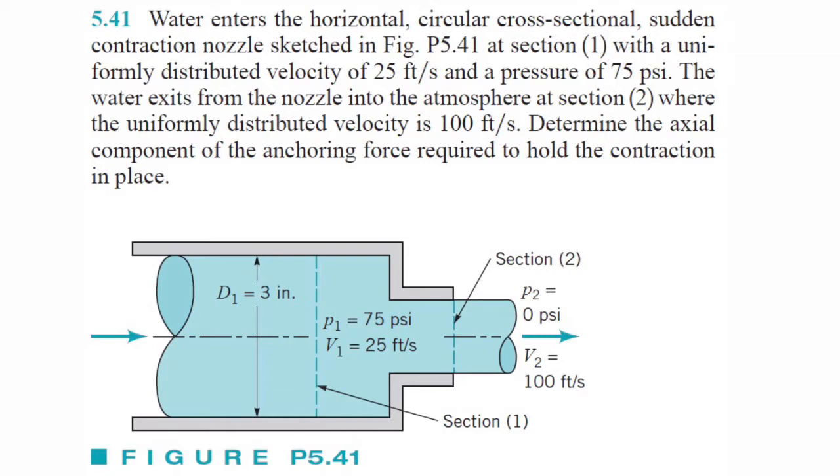At section 1 with a uniformly distributed velocity of 25 feet per second and a pressure of 75 psi. The water exits from the nozzle into the atmosphere at section 2, where the uniform distributed velocity is 100 feet per second.